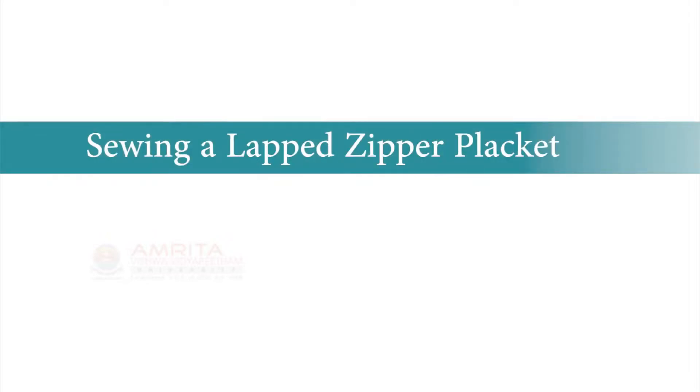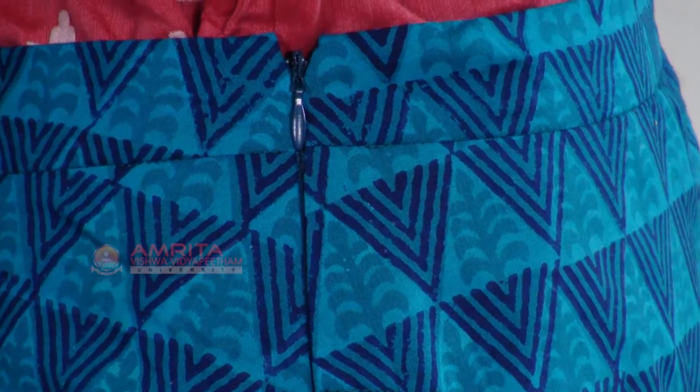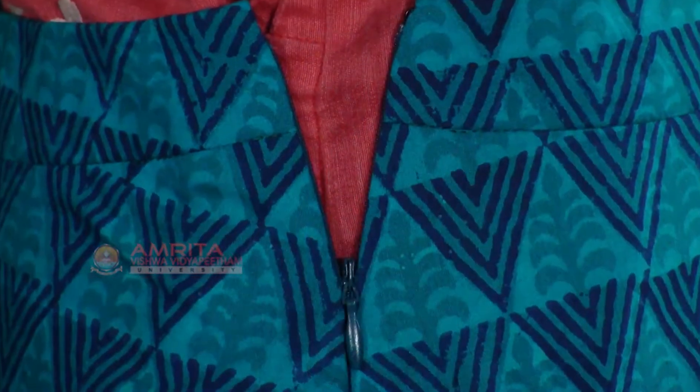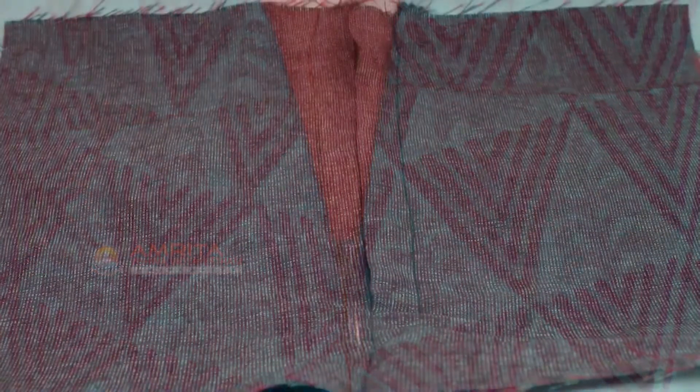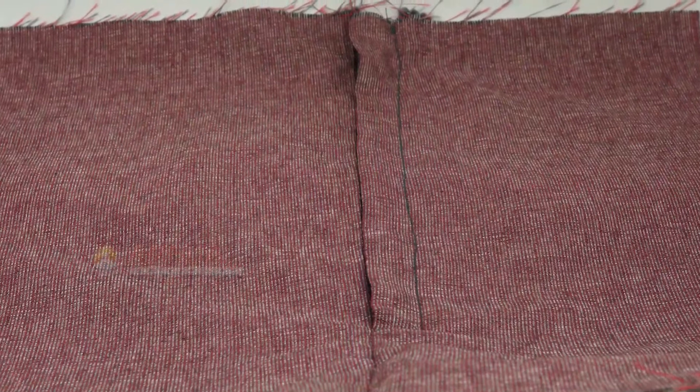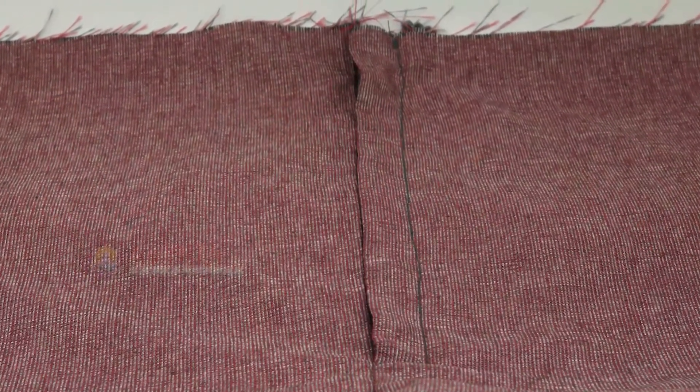Sewing a Lapped Zipper Placket. Lapped zippers are often found on skirts at the waistband. A lapped zipper is constructed so that the zipper is not visible. Learning to stitch a lapped zipper placket will help you while stitching lady skirts. At the end of this class, you will be able to stitch a lapped zipper placket.